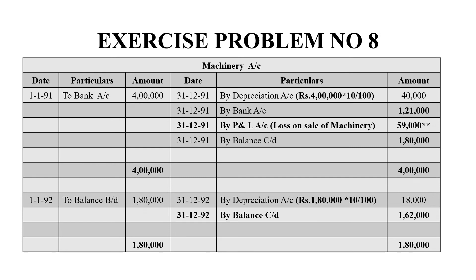After these entries, we are left with 1,80,000 worth of machinery in hand. The grand total on both sides is 4,00,000. The balancing figure brought down on 1-1-92 is 1,80,000. For 1992, depreciation on 31-12-92 is 1,80,000 into 10/100 equals 18,000. The balancing figure is 1,62,000 and the grand total on both sides is 1,80,000.